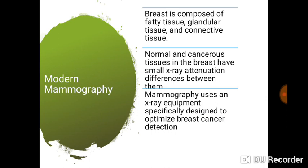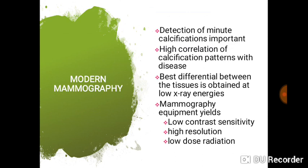In modern day mammography, the breast is composed of fatty tissue, glandular tissue, and connective tissue. Normal and cancerous tissues in the breast have small X-ray attenuation differences between them, so mammography uses X-ray equipment specifically designed to optimize for breast cancer detection. Detection of minor calcifications is important, and there is a high correlation of calcification patterns with disease. The best differential between tissues is obtained at low X-ray energies. Mammography equipment yields low contrast sensitivity, high resolution, and low dose radiation.